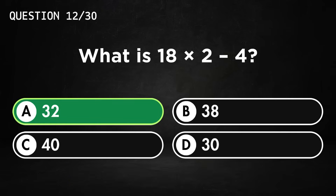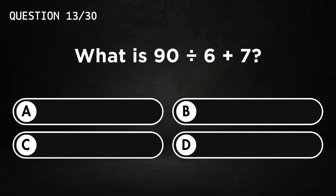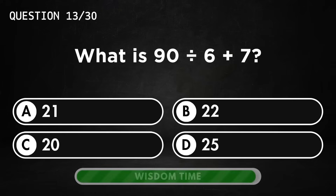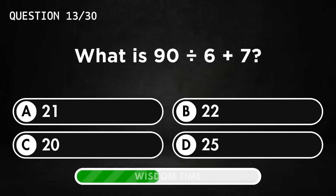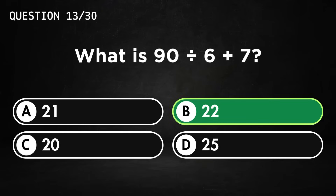Answer A, 22. What is 90 divided by 6 plus 7? Answer B, 22.